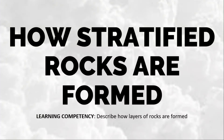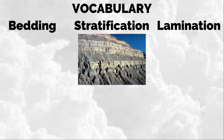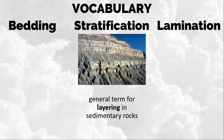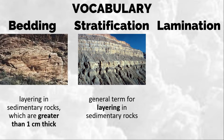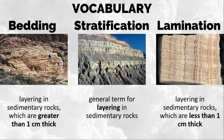In this video we're going to talk about how stratified rocks are formed. First, let's describe some vocabulary words: bedding, stratification, and lamination. Stratification refers to layering that occurs in sedimentary rocks. A layer is a three-dimensional feature common in sedimentary rocks — igneous rocks can also exhibit layering, especially when formed at the surface of the earth. Bedding is the layering in sedimentary rocks greater than one centimeter thick, while lamination is layering less than one centimeter thick.